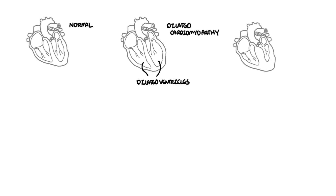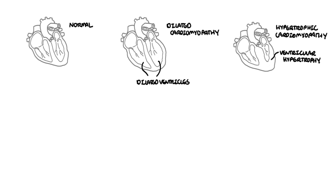The second type is hypertrophic cardiomyopathy, where the ventricles have hypertrophied. This typically involves the septum area — the interventricular septum — resulting in filling issues in the ventricles, causing diastolic dysfunction. It is also an important cause of sudden cardiac death in young people.